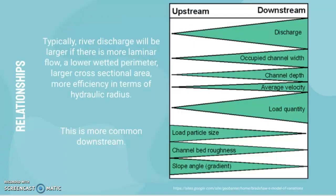Typically, river discharge will be larger if there is more laminar flow, a lower wetted perimeter, a larger cross-sectional area, and greater efficiency in terms of hydraulic radius. Looking at the Bradshaw model, which shows expected river characteristics from upstream to downstream...